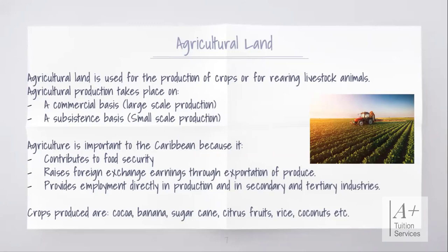Crops produced in the Caribbean include cocoa, banana, sugar cane, citrus fruits, rice, and coconut — just to name a few. We have small-scale and large-scale farming. We also have long-term and short-term crops. Long-term crops include banana, cocoa, and sugar cane, while short-term crops are like tomatoes, lettuce, cucumbers, and melongene, and so forth.